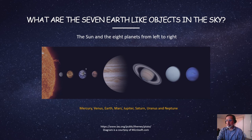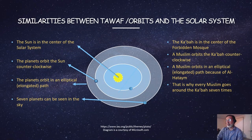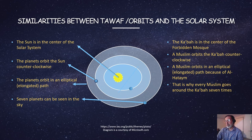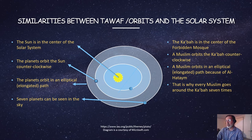This slide makes it very clear what Allah meant by making the Ka'bah and its rituals — that you may know that Allah knows what is in the skies and the earth. Listed here are the similarities between our solar system and the Tawaf orbits around the Ka'bah. The sun is in the center of the solar system; therefore, the Ka'bah is in the center of the Forbidden Mosque. The planets orbit the sun counterclockwise; a Muslim orbits the Ka'bah counterclockwise. The planets orbit in an elliptical elongated path; a Muslim orbits in an elliptical elongated path because of Al-Hatim.